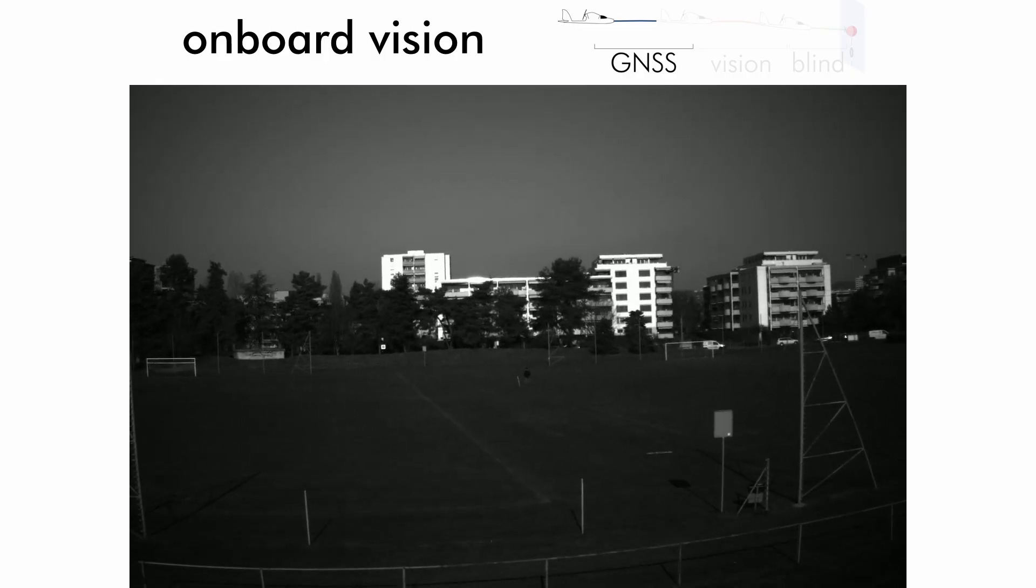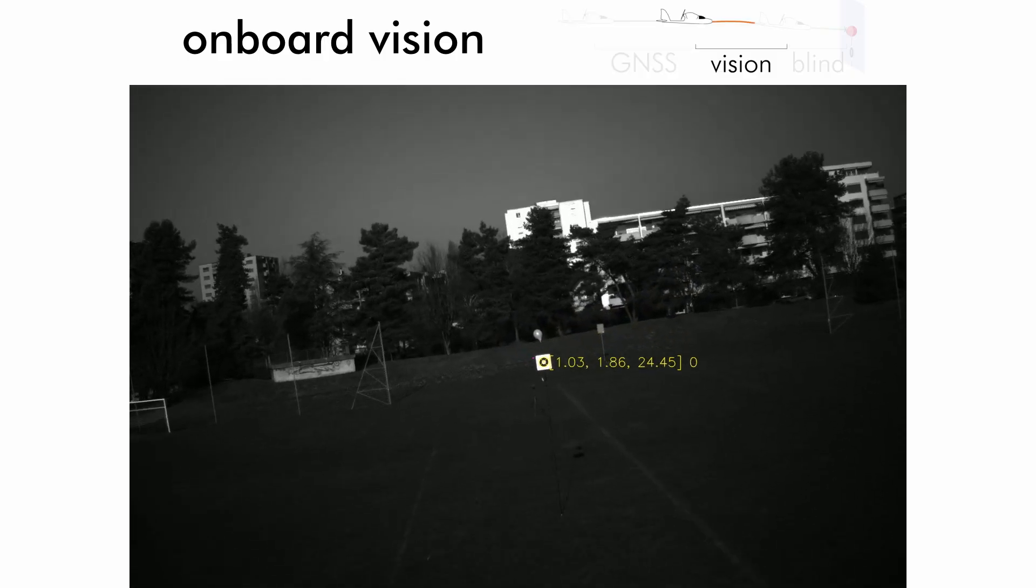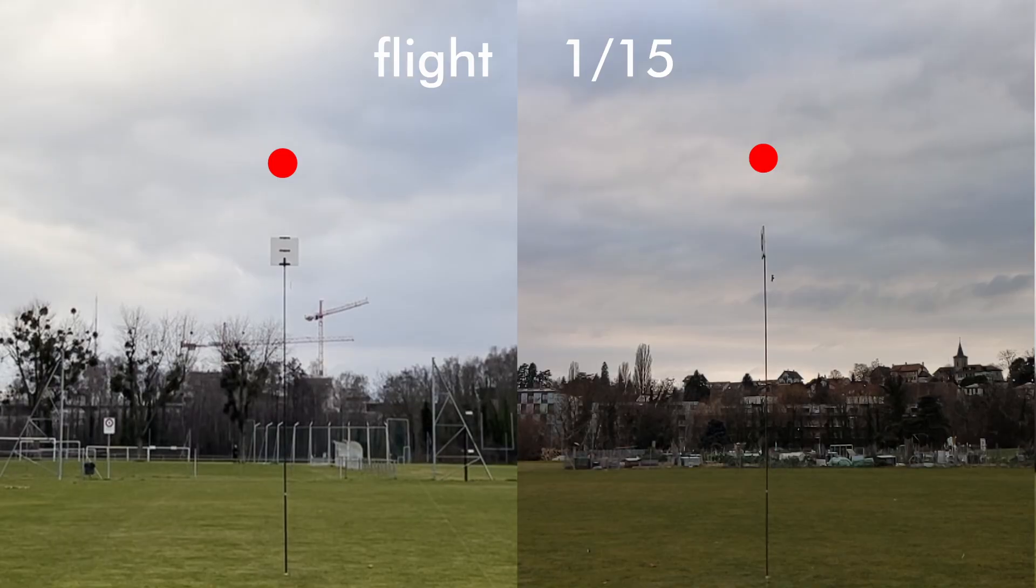We conducted outdoor experiments to assess the robustness of vision-based control to compensate for GNSS errors and quantify the accuracy of the proposed method.